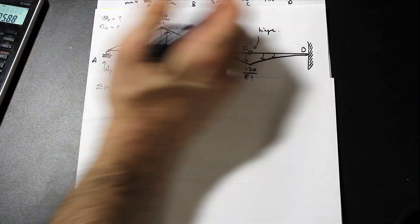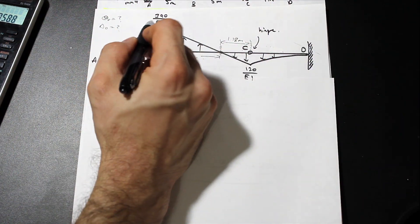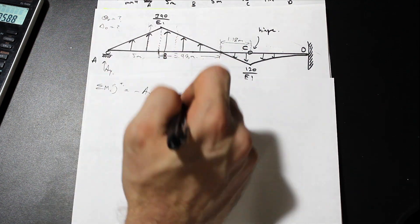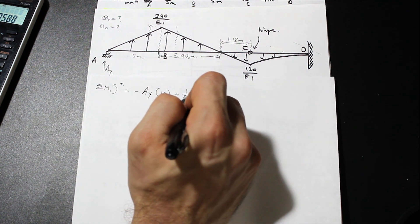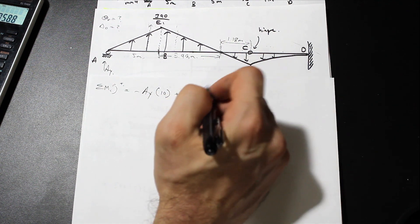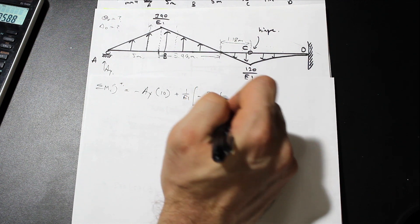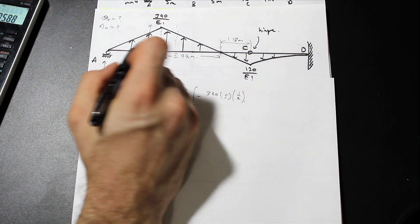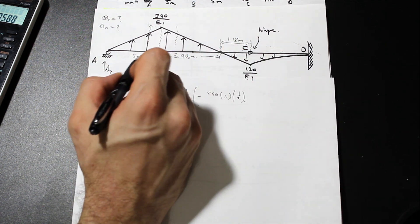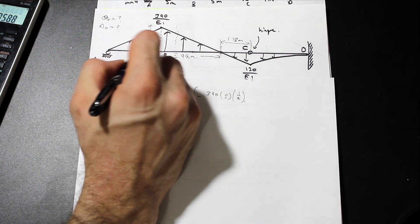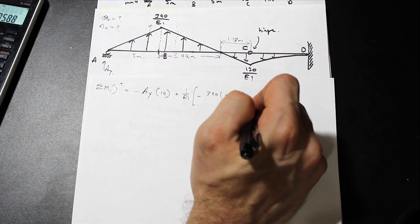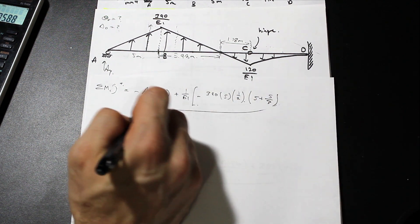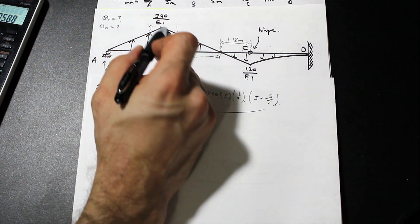Now we find the moment about C for the left portion. Factoring out EI, we have a negative moment from the triangle: 390 times 5 times one-half, multiplied by the distance to the centroid, which is 5 plus one-third of 5.